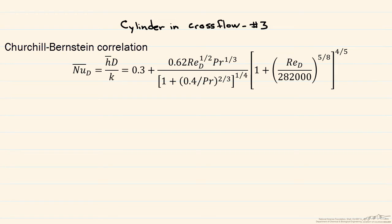This is the third in a series of screencasts about cylinders and crossflow. We're using different correlations to find our Nusselt number, which gives us our convective heat coefficient h.